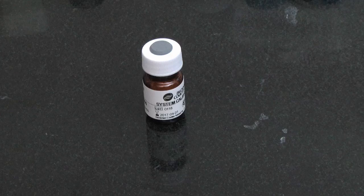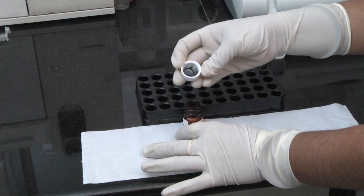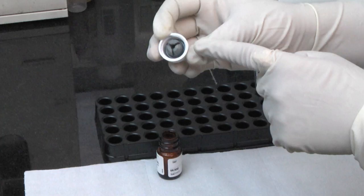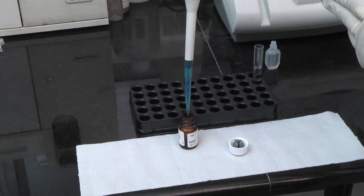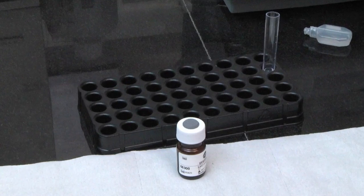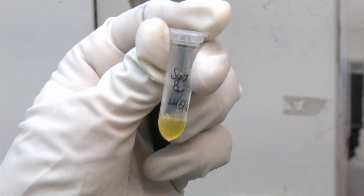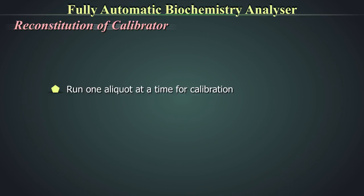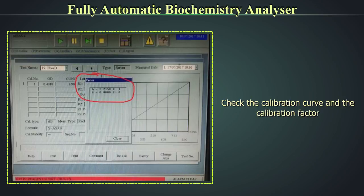Reconstitution of calibrator: Take out the vial from the refrigerator and bring it to room temperature. Open the vial and place the cap on the workbench gently, noting the calibrator powder adhering to the inside of the cap. As calibrators are expensive and last for a short duration, use them judiciously. Reconstitute the calibrator with 5 ml of injection water, close the cap, and mix gently by inversion. Keep it for 10 minutes, then mix again; wait another 10 minutes, mix, then distribute into aliquots and label them. Store aliquots in the freezer at −10 to −20°C. Run one aliquot at a time; remove from the freezer, thaw, use, and discard the rest. Check the calibration curve and the calibration factor.